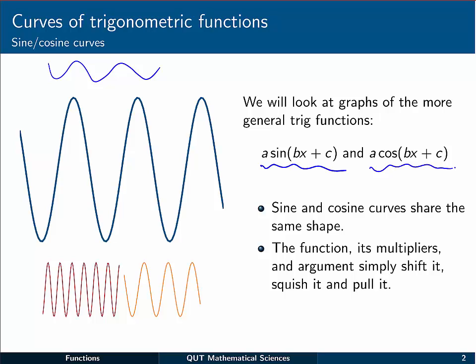So as we've said, sine and cosine curves will share the same shape. But we're going to look at multipliers and changes to the argument that will shift it, squish it, and pull it.